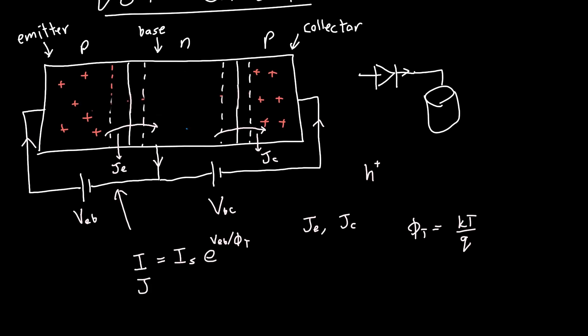I is just some IS, some constant, times E to the voltage applied, in this case VEB, divided by the thermal voltage phi T, where phi T is just KT over Q. So that's JE, or we could write it as J, just dividing by the area, E to the VEB over phi T. Now if you wanted to be really precise, you could add this minus one to make sure there's no current when you apply no voltage, but approximately when VEB is large, the original expression should do us just fine.